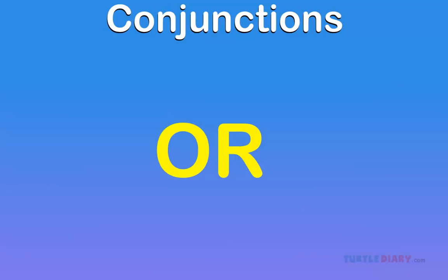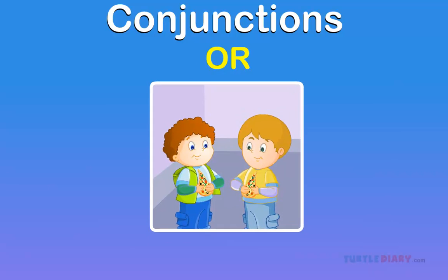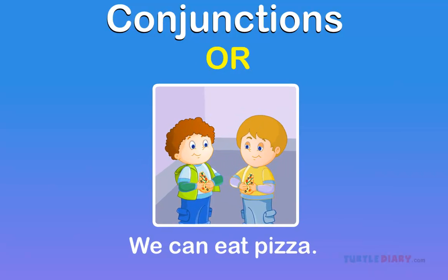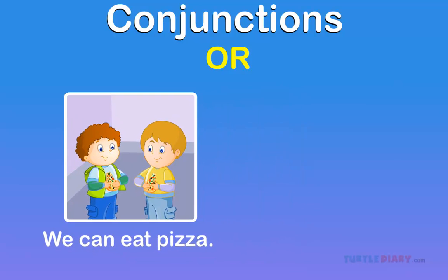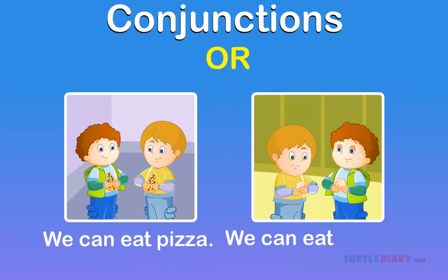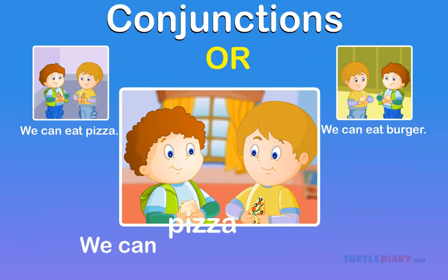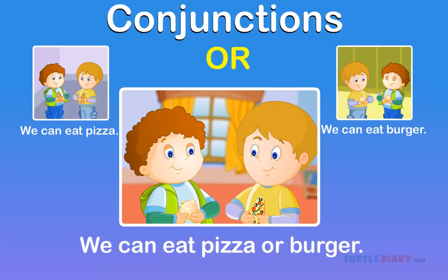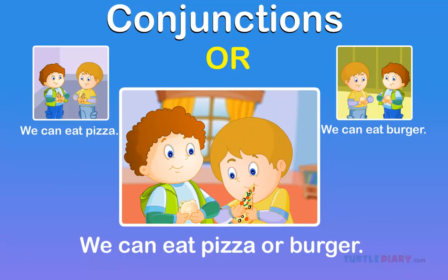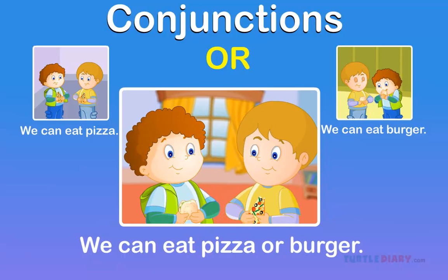Or. 'Or' is a connecting word that suggests there is only one choice. We can eat pizza. We can eat a burger. We can eat pizza or burger. Here, 'or' is used to give a choice between pizza and burger.